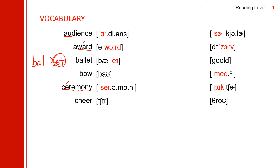Next one: circular. C-I-R-C-U-L-A-R. Accent on the first syllable. Circular. Next one: deserve. It spells D-E-S-E-R-V-E, accent on the second syllable. Deserve.